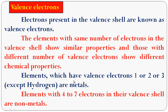Elements that have valence electrons 1, 2, or 3 — except hydrogen — are metals. For example, lithium has valence electron 1, so its valence is 1. Magnesium has atomic number 12 and valence electron 2. Aluminium has atomic number 13 and valence electron 3. So these metals with valence electrons 1, 2, or 3 are called metals.